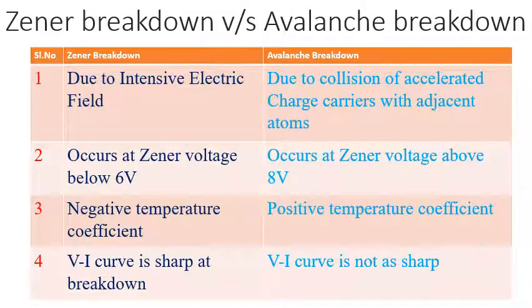Here is a comparison table between Zener breakdown and avalanche breakdown. First, Zener breakdown is due to intensive electric field, and avalanche breakdown is due to collision of charge carriers — electrons — with adjacent covalent bonds. Second, Zener breakdown occurs at a reverse voltage below 6 to 8V, and avalanche breakdown occurs at a reverse voltage greater than 8V. Third, Zener breakdown has a negative temperature coefficient — it decreases with temperature — while avalanche breakdown increases with temperature. Fourth, the V-I curve is sharp at Zener breakdown, meaning it takes a sudden breakdown, whereas in avalanche breakdown the V-I curve is gradual and not sharp.